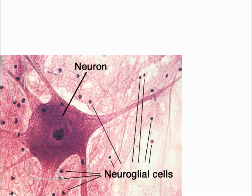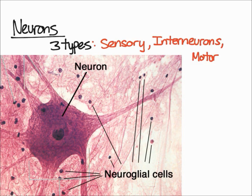Nervous tissue is made up of neurons, which are the same thing as nerve cells, as well as neuroglia or glial cells. In general, there are three types of neurons: sensory neurons, interneurons, and motor neurons.